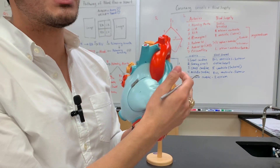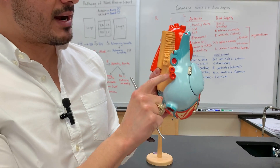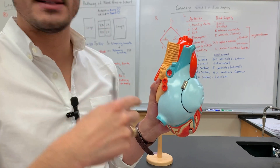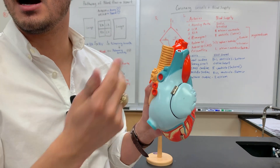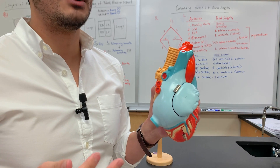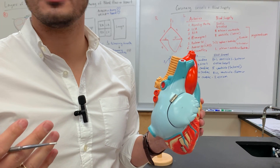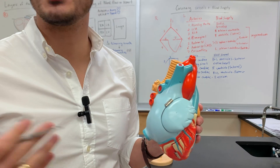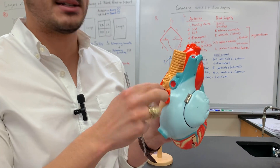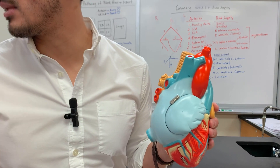Once the blood goes to the lungs it gets oxygenated. These are the pulmonary veins — they are red because the blood is oxygenated. It throws people off because veins in the body are typically shown as blue and arteries as red, but it's inverted in this case because the blood has been oxygenated.